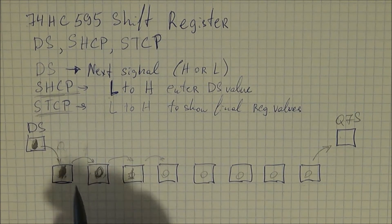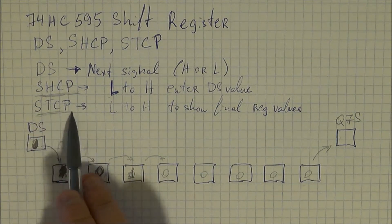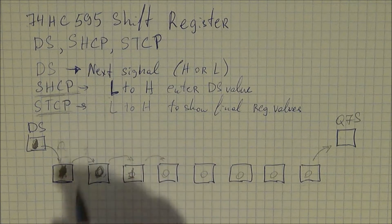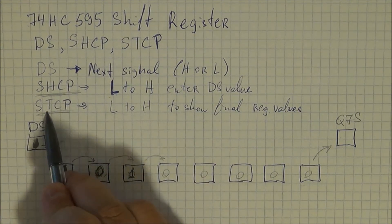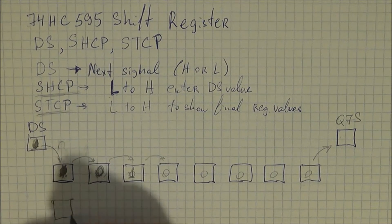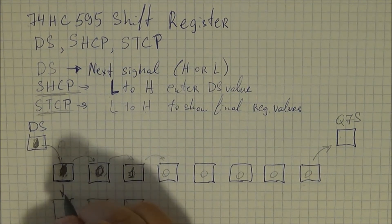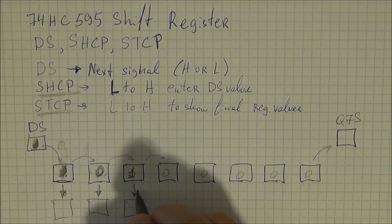The STCP, again, these are all changes that are happening while STCP is low. So there's no transition yet. After you've initiated this transition, so after you've done low to high on the STCP pin, what's going to happen is you're going to push each one of these values into the output pins.